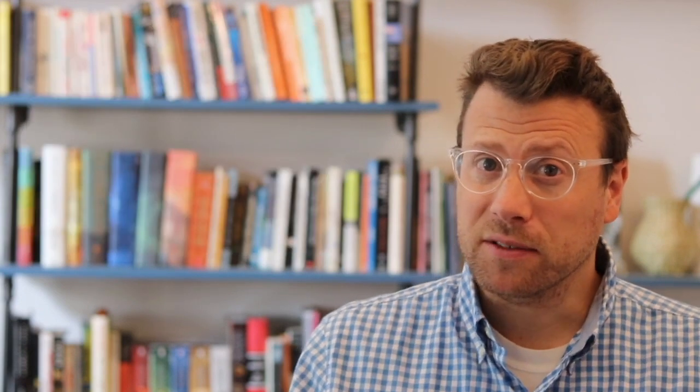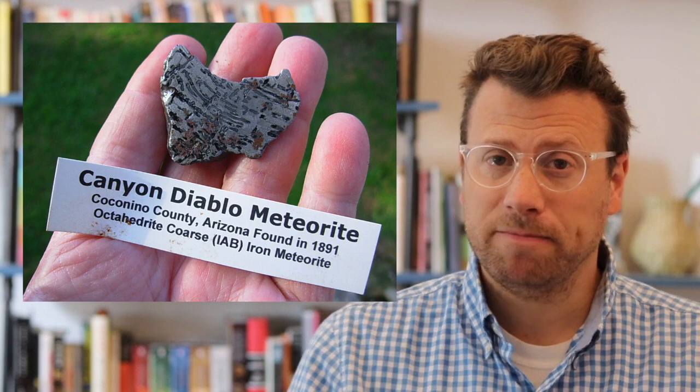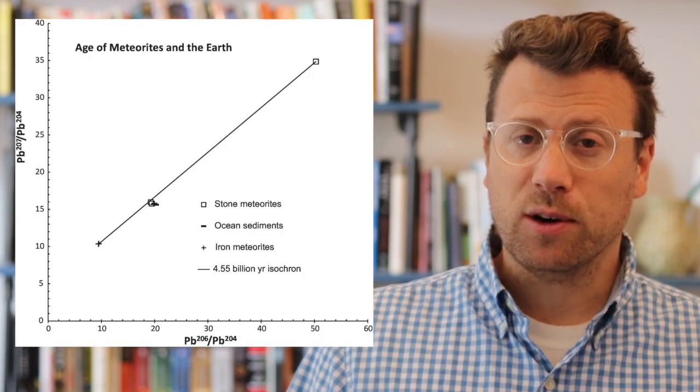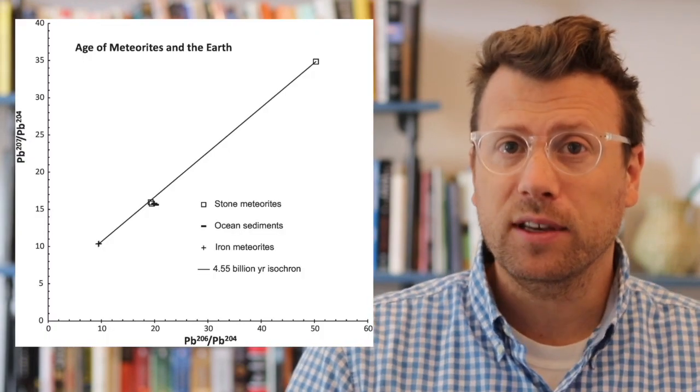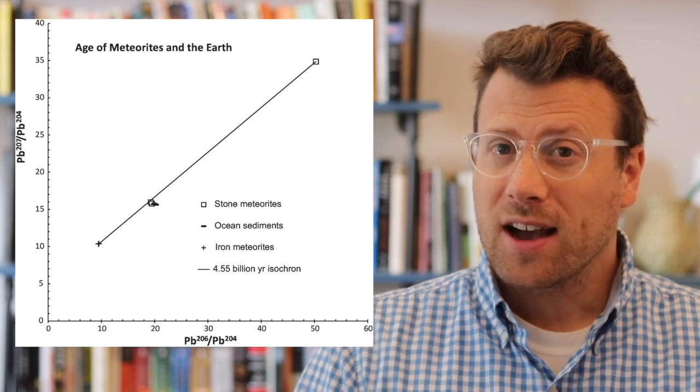You can buy pieces of it on the internet. Before the internet existed, a geoscientist named Claire Patterson in the 1950s analyzed pieces of the Arizona meteorite — at that time called the Canyon Diablo meteorite — and used them to calculate the age of the earth to be 4.5 billion years old, a number that has remained more or less unchanged ever since.